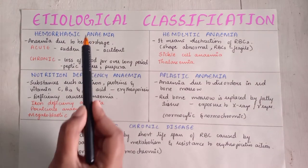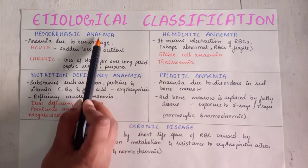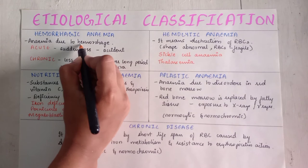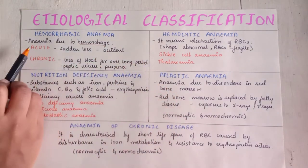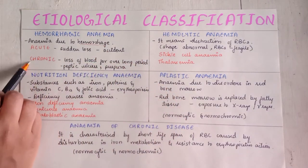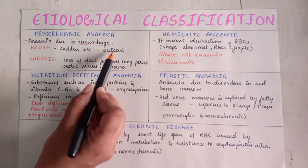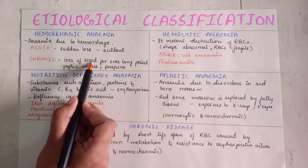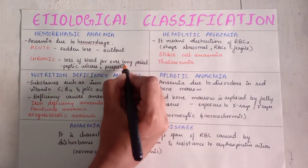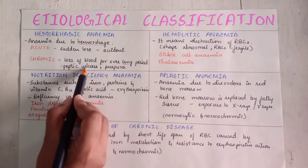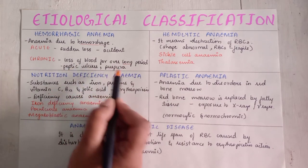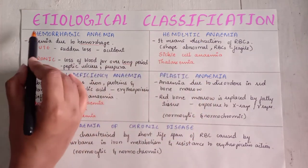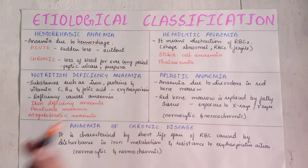First: hemorrhagic anemia. Hemorrhagic means anemia due to hemorrhage, where hemorrhage means bleeding. It is of two types — acute and chronic. Acute involves sudden loss of blood such as from an accident. Chronic means loss of blood over a long period, like in ulcers, purpura, menorrhagia, and other long-term causes.